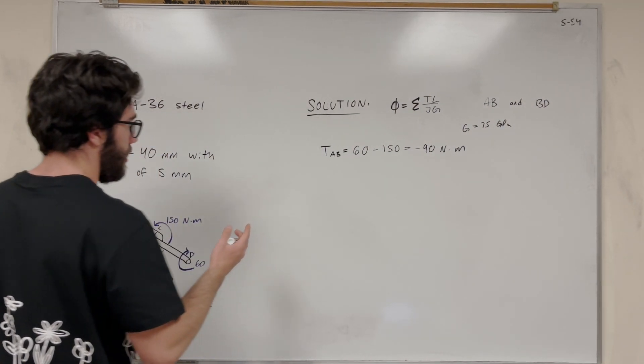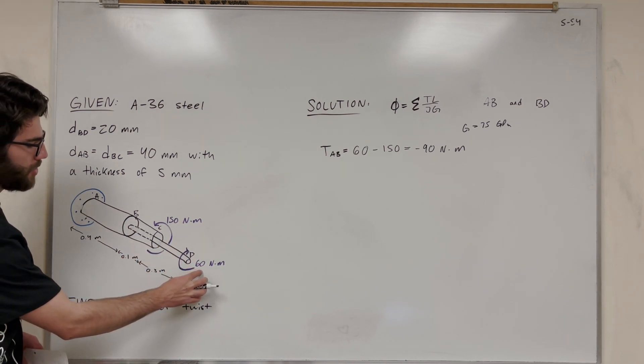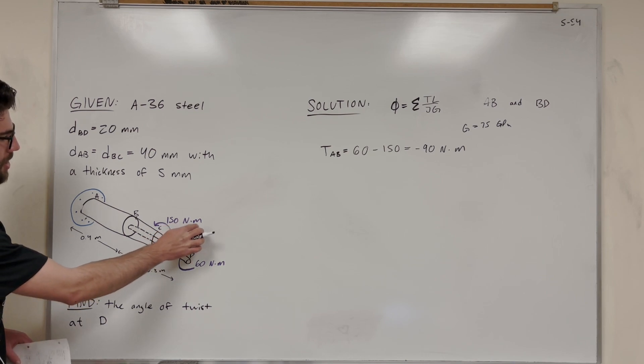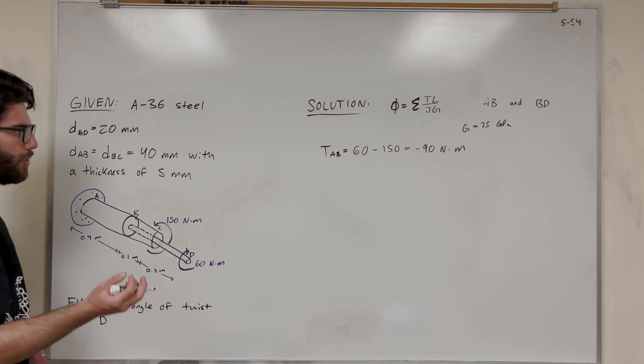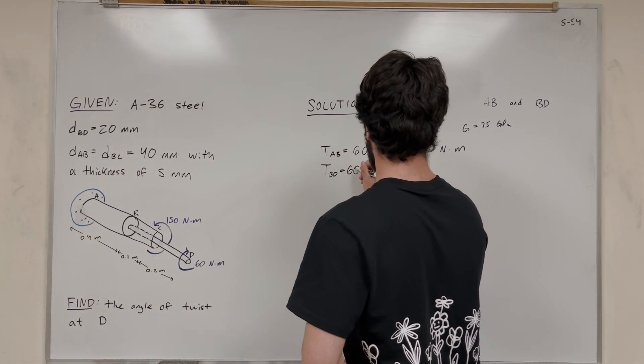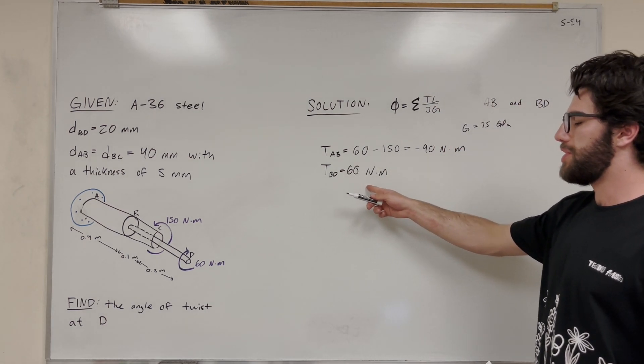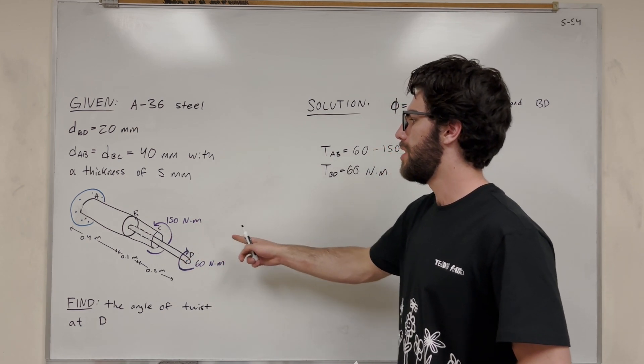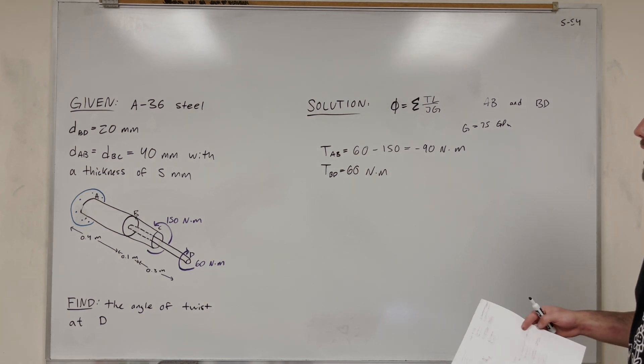Then we have to look at section BD. So BD is getting this 60 newton-meter torque applied, which is pretty easy to tell. But not with this 150 newton-meter one. It's actually not getting applied to the system here. It's getting applied to this outer one, which is twisting AB, but it's not going to make a difference on the twist of BD. So the twist of BD is just going to be equal to 60 newton-meters. And let's make sure that there were different directions. This is being rotated. This total twist is going counterclockwise, whereas the total twist in A is going clockwise. So this needs to be negative 90. This needs to be positive 60. So we have that.